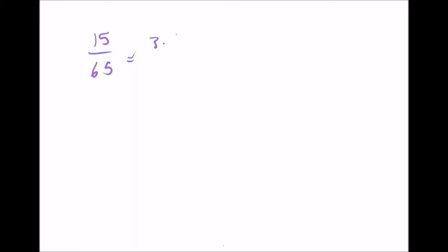You know that if you have something like 15 over 65, you would need to simplify that. What you're really doing is saying 15 is 3 times 5, and 65 is 13 times 5, crossing out the 5, and you're left with 3 over 13, because you're taking out the common factor and just leaving what's left.